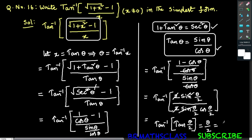That equals theta by 2, which we can write as 1 by 2 into theta. Since we took x equals tan theta, theta is tan inverse x. So in place of theta, write tan inverse x. Therefore, the simplest form of the given expression is 1 by 2 into tan inverse x.